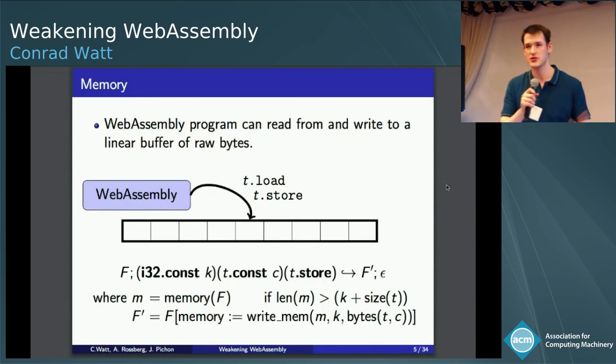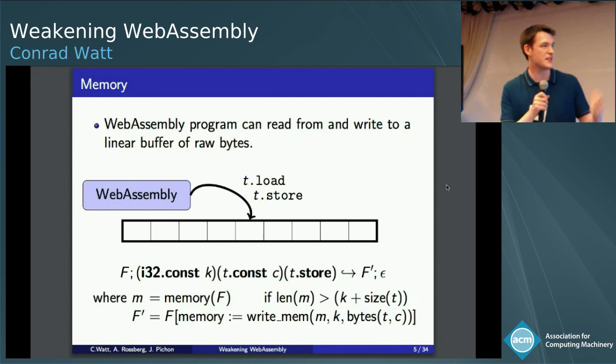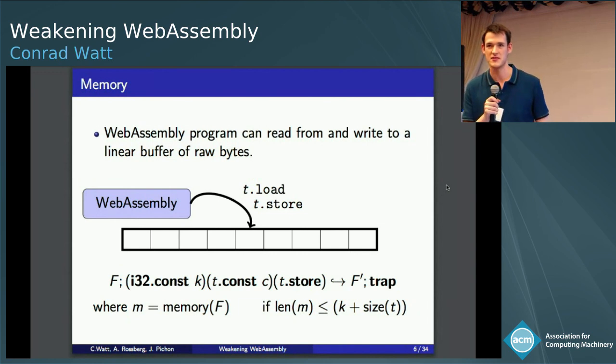And similarly with store, store takes two arguments, an index and the value you're going to store. And the semantics is that you go to index k, and then you linearize the value c, and you just put bytes in memory to represent c. And again, that can be out of bounds, and you'll trap if it is.